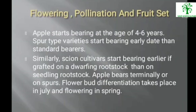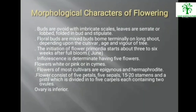Apple starts bearing at the age of 4 to 6 years. Spur type varieties start bearing earlier than standard bearers. Apple bears terminally or on spurs. Flower bud differentiation takes place in July and flowering occurs in spring. Buds are covered with imbricate scales; leaves are serrate or lobed, folded in bud and stipulate. Inflorescences are determinate, having 5 flowers; flowers are white or pink. Flowers of most cultivars are epigynous and hermaphrodite, consisting of 5 petals, 5 sepals, 15–20 stamens, divided into 5 carpels each containing 2 ovules. The ovary is inferior in the apple tree.